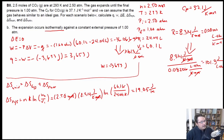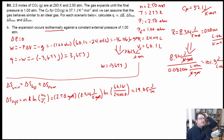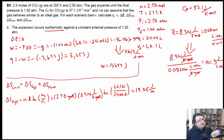The reason delta S of the system is the same as in Part A is that delta S of the system is a state function — it depends on the state of the system, not the path. Both cases are isothermal with the same number of moles, temperature, pressures, and volumes, so the delta S of the system is equal in both cases.